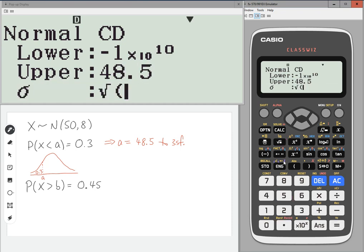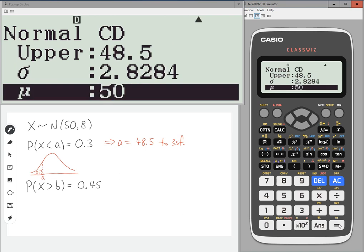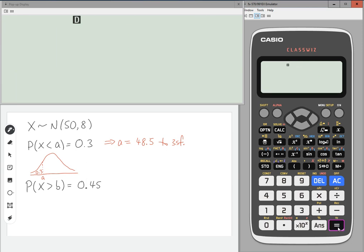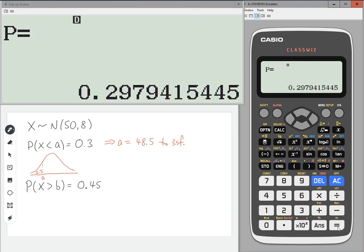Sigma here is the square root of 8. It should retain that information. And the mean is 50. As it's retained it, press equals. Now what we're looking for is something close to 0.3, and so that shows that we're getting the correct value here.